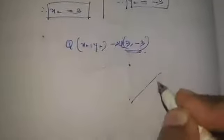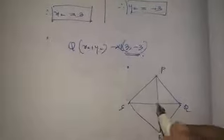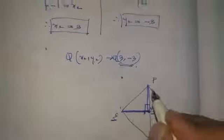Now draw the rhombus diagram again. In a rhombus, the diagonals are perpendicular to each other. So SM is perpendicular to PM. This perpendicular condition means the product of the two slope values equals minus 1.